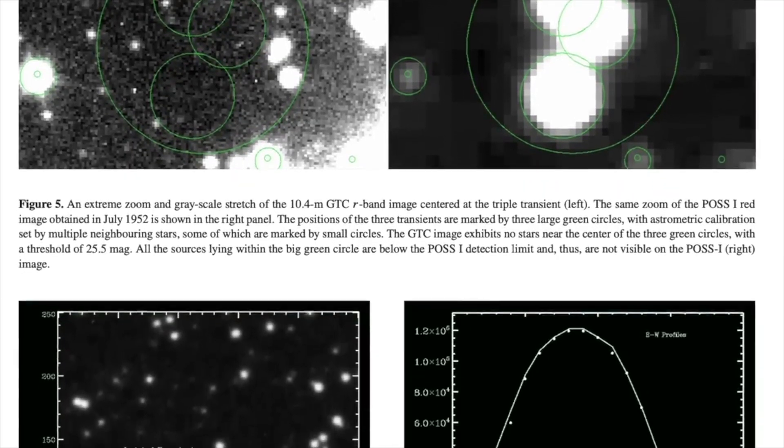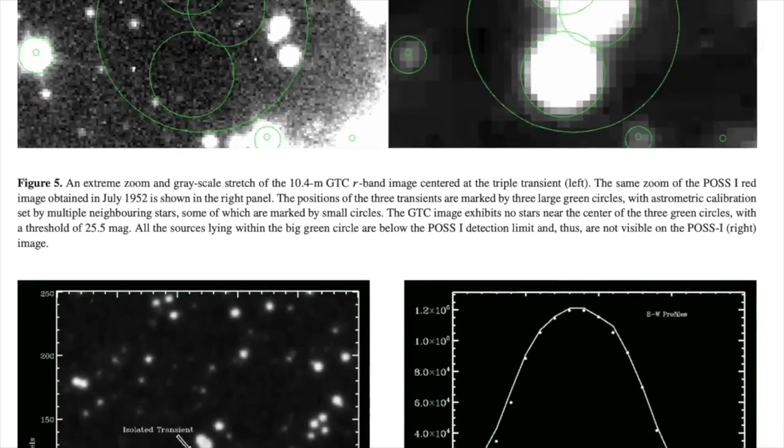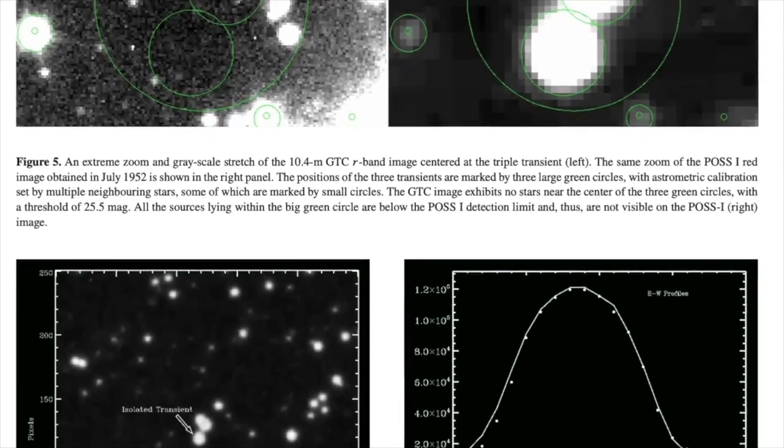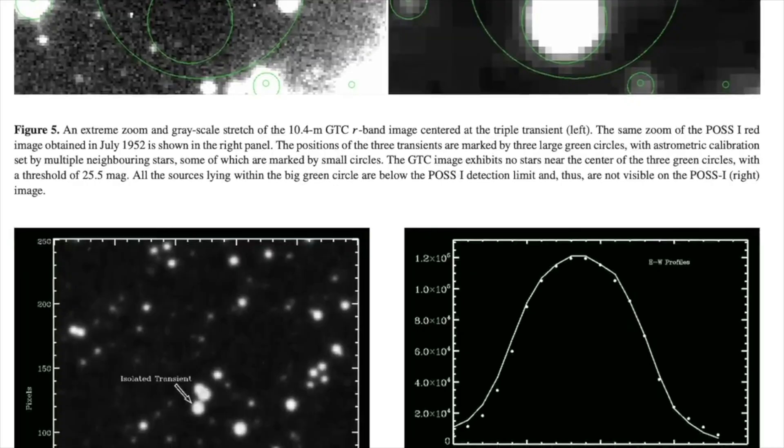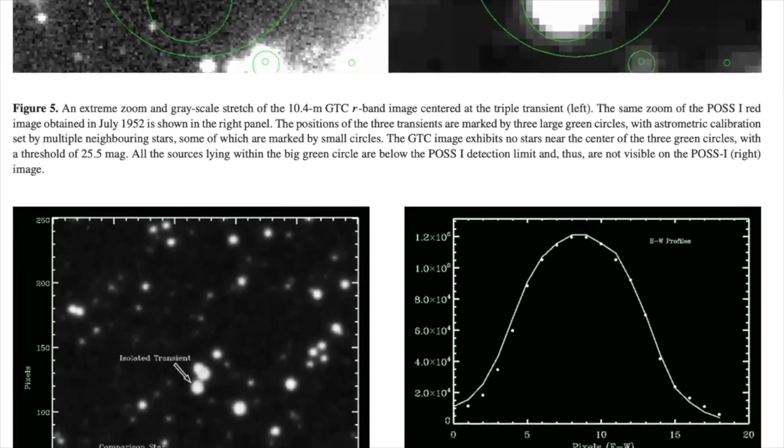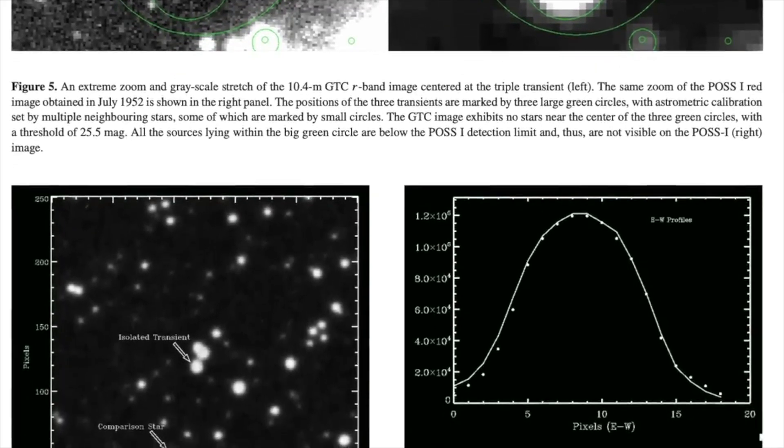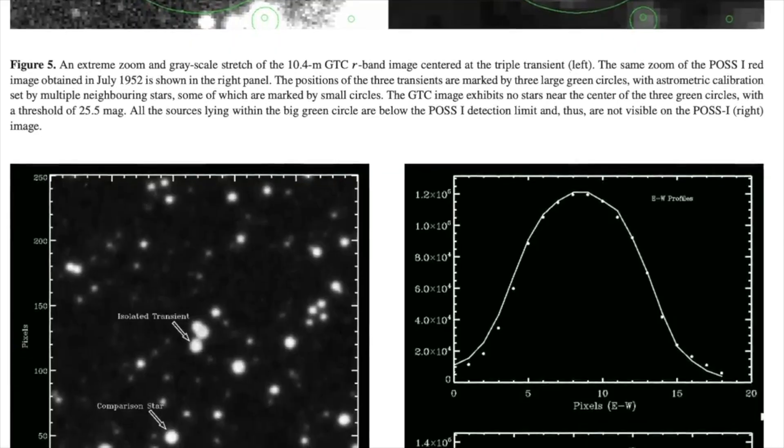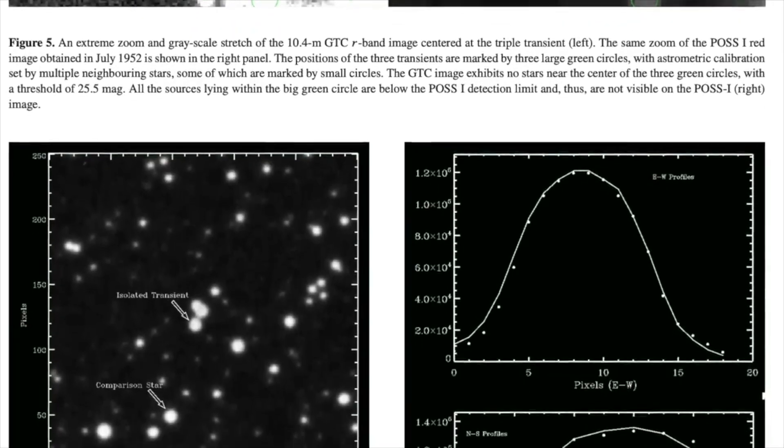And of course, when you have one coincidence, you say, okay, maybe it's just a coincidence. When you have two coincidences for each from one of the two weekends of the Washington flyover, it was on the two weekends. Then you really start wondering if there is a correlation between the transients, these objects that we see, and UFO events.